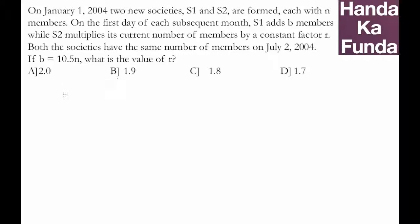In this question, we are given two societies S1 and S2, both with the same number of members, n, on January 1st. Every subsequent month, S1 adds b members while S2 multiplies its current number of members by a constant factor r.